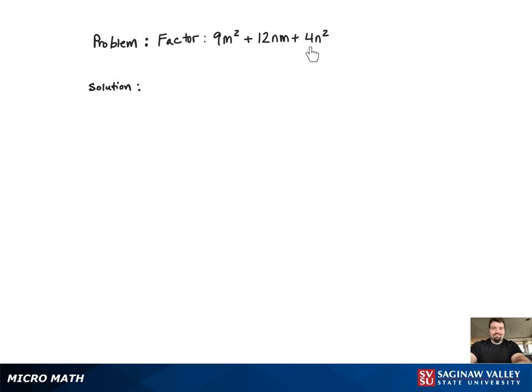What makes this problem challenging is that both the coefficient of the n-squared and m-squared terms are non-prime numbers. So we need to look at all of their factors.